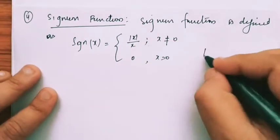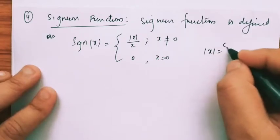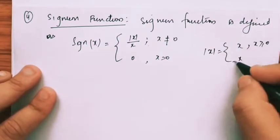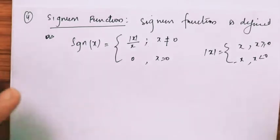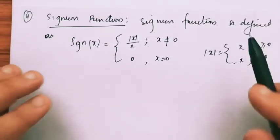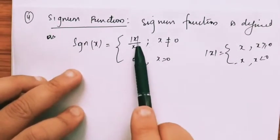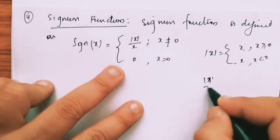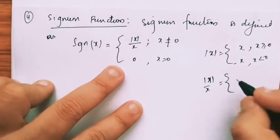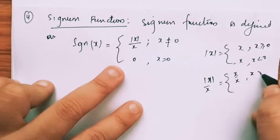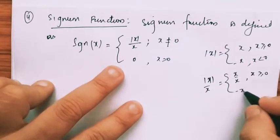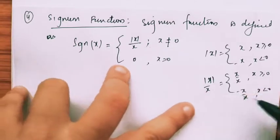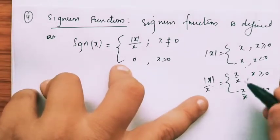Mod X की definition हमें पता है — mod X क्या होता है? X when X is positive and minus X when X is negative. This is the definition. हम modulus की definition को यहाँ open कर देंगे, तो देखें क्या होगा — mod X by X क्या हो जाएगा? X over X when X is greater than or equal to 0, and minus X over X when X is less than 0. बस modulus की definition को यहाँ use कर लेना है।